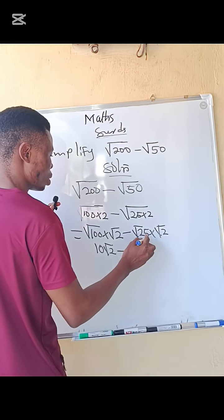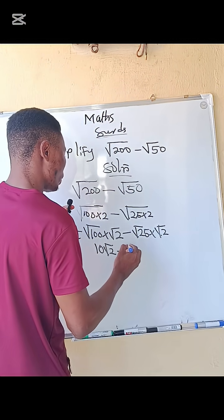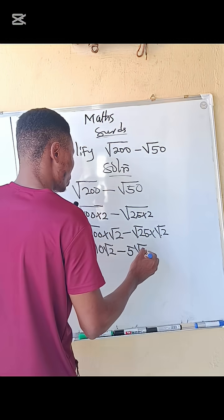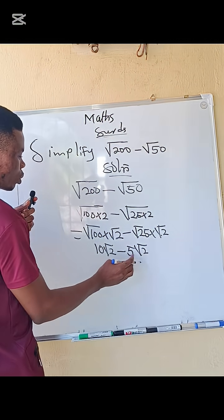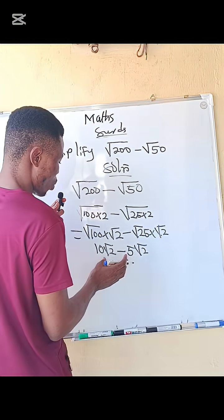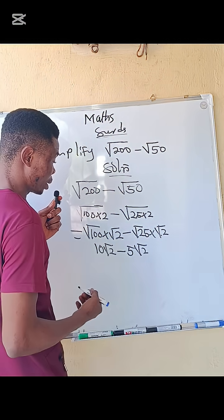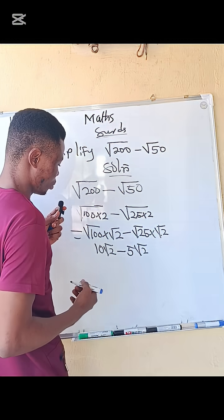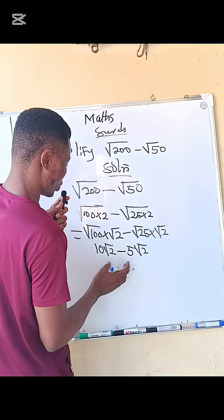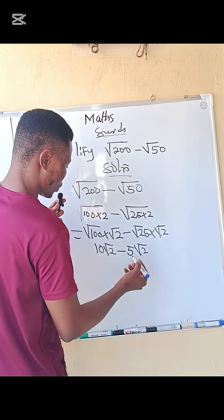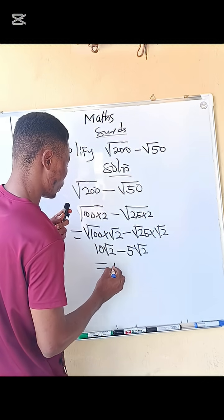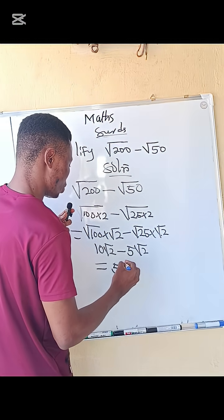What is the square root of 25? That is 5. 5√2. So look at this, there is what we call similar surds. Whenever you have similar surds, you can subtract or add them. So in this case, since it is subtraction, we are going to subtract. So 10 minus 5 is going to give us 5. We now attach the √2.